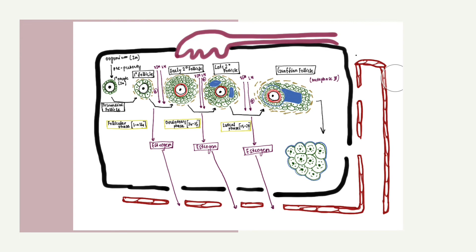In each ovarian cycle, about 20 primordial follicles are activated to begin maturation. However, normally only one follicle fully matures and the rest contribute to the endocrine function of the ovary.